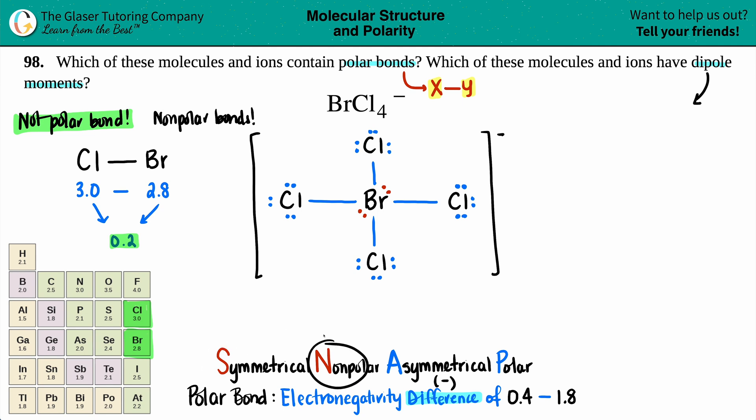A dipole moment is taking the ion and viewing it as one whole ion, asking: is there an uneven distribution of electrons in this whole thing? This is where SNAP comes into play. If everything is symmetrical around your molecule, you have a non-polar molecule, but if you're polar, that molecule is asymmetrical, and dipole moments only exist if you have a polar molecule or polar ion.